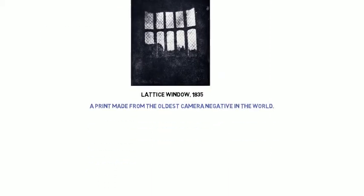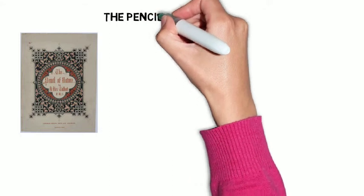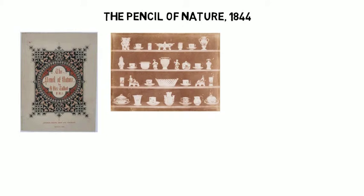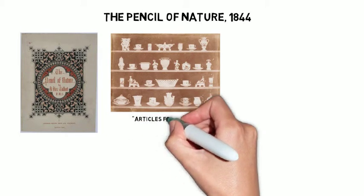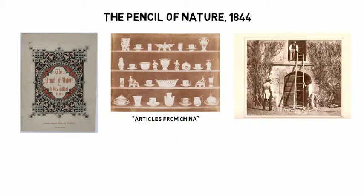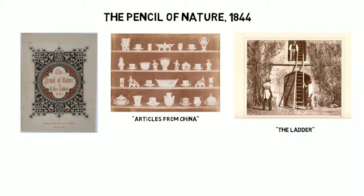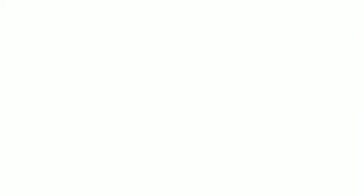Talbot continued to refine his light-sensitive paper and in 1844 published Pencil of Nature, the first book of photographs. Although methods of integrating text and photos in printed materials weren't invented until the turn of the century, Talbot's book was a harbinger of the real possibilities of photo-illustrated text. However, both Talbot's and Daguerre's methods had their faults.